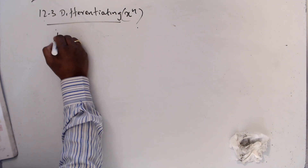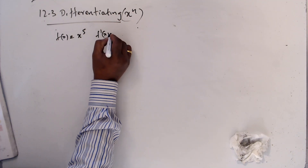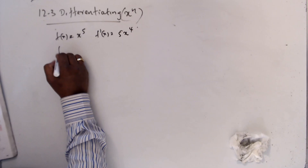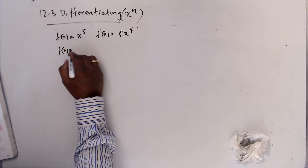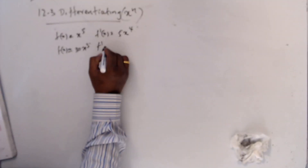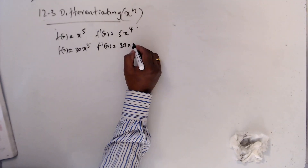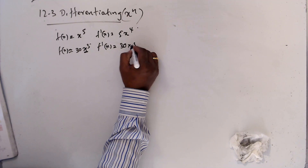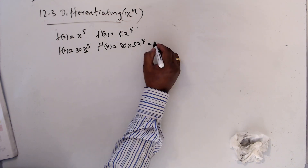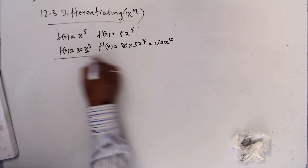Now we have the knowledge: if f(x) = x⁵, we know f'(x) = 5x⁴. If we know f(x) = 30·x⁵, then f'(x) = 30 times 5·x⁴, which is 150·x⁴. That's the rule.